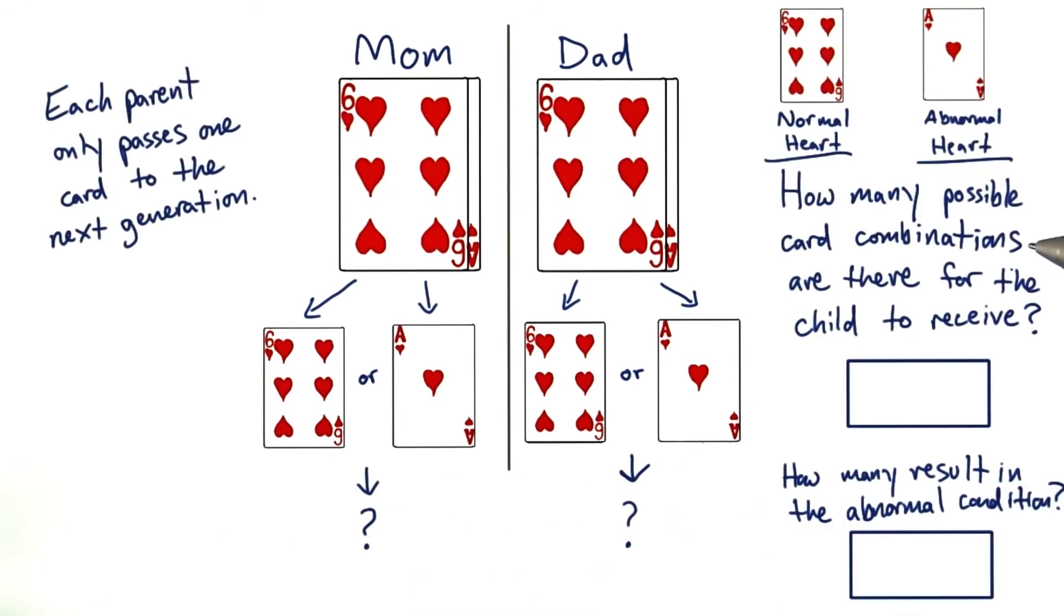So see if you can figure out how many total possible combinations there are if these two parents have a child, and how many combinations would result in the heart condition.